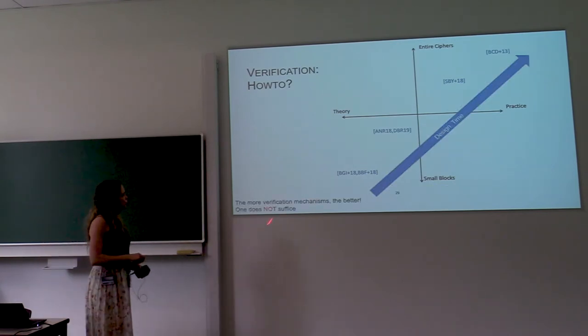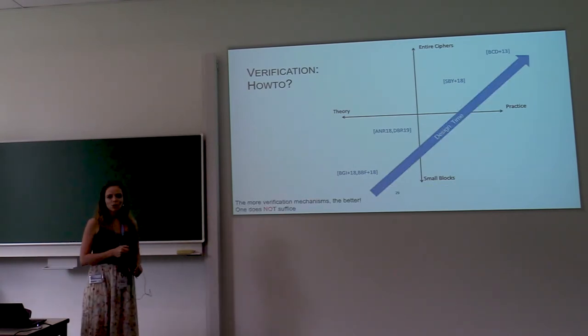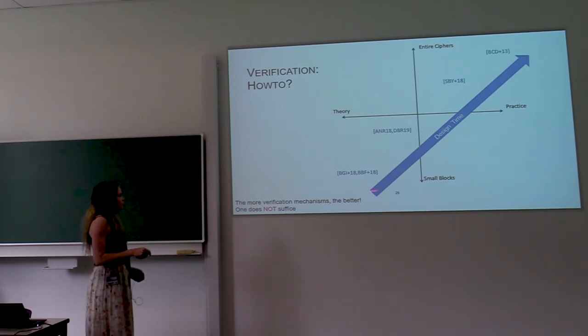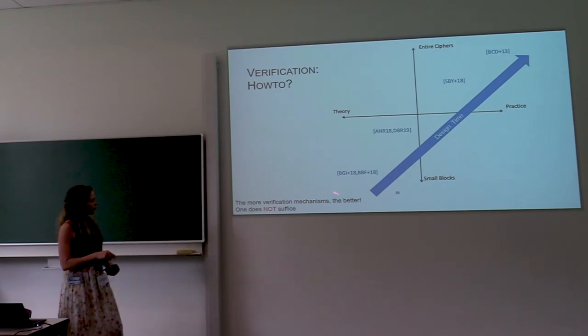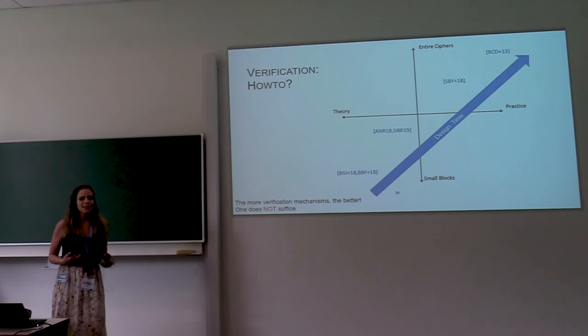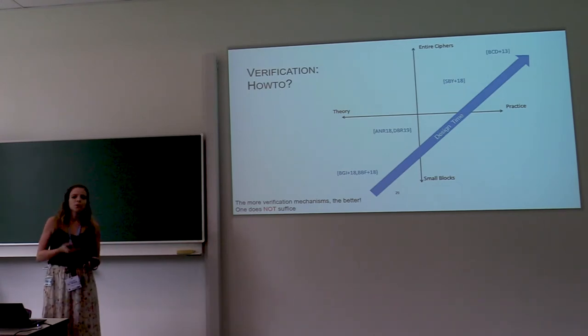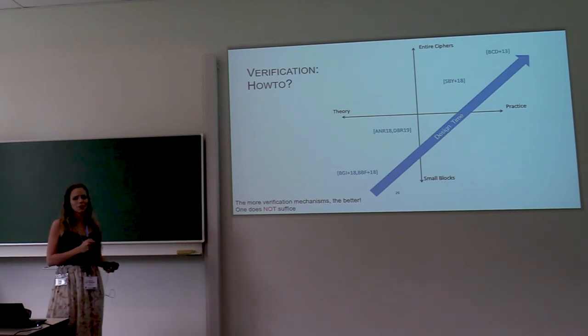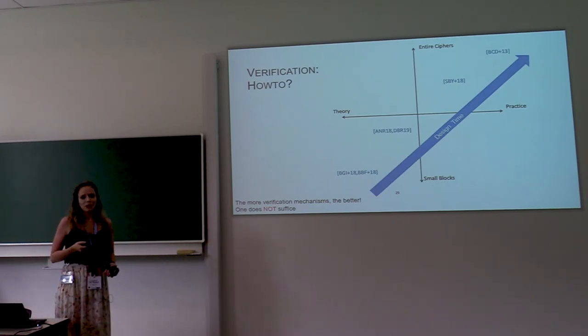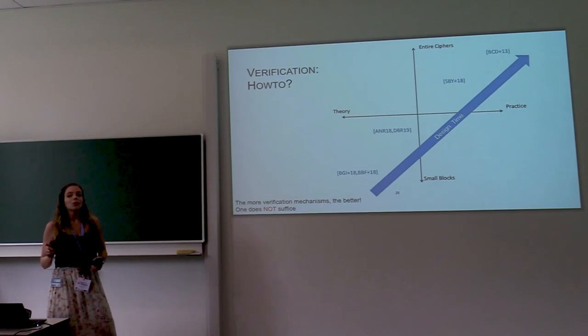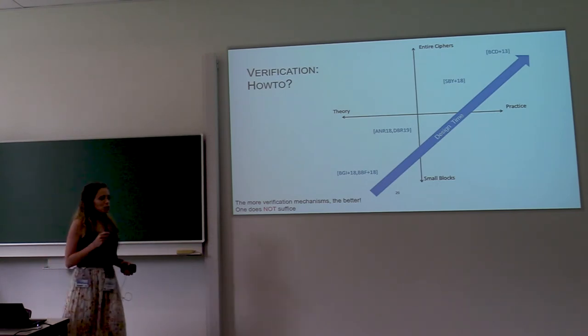So then what should be your takeaway from this? Basically, you should use all these tools as you are progressing in your design process. You should use some formal verification for the smallest blocks. As your circuit grows, keep doing things in simulation. Because if there's a problem, you want to detect it early on. And then if you're going to tape out an ASIC, you definitely want to try some post-based simulation. Because it would be an expensive joke if it turns out to leak. And then always, always, always test your implementation on a real device. So like an FPGA, even if you're going to do an ASIC.